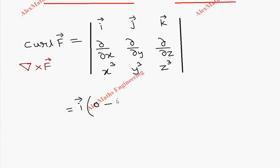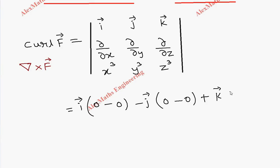Partial derivative of y cube with respect to z is also 0. Now coming to the second term, it is minus j vector into ∂/∂x of z cube, that is 0, and ∂/∂z of x cube is 0. And the last term, k vector into ∂/∂x of y cube. Partial derivative of y cube with respect to x is 0.